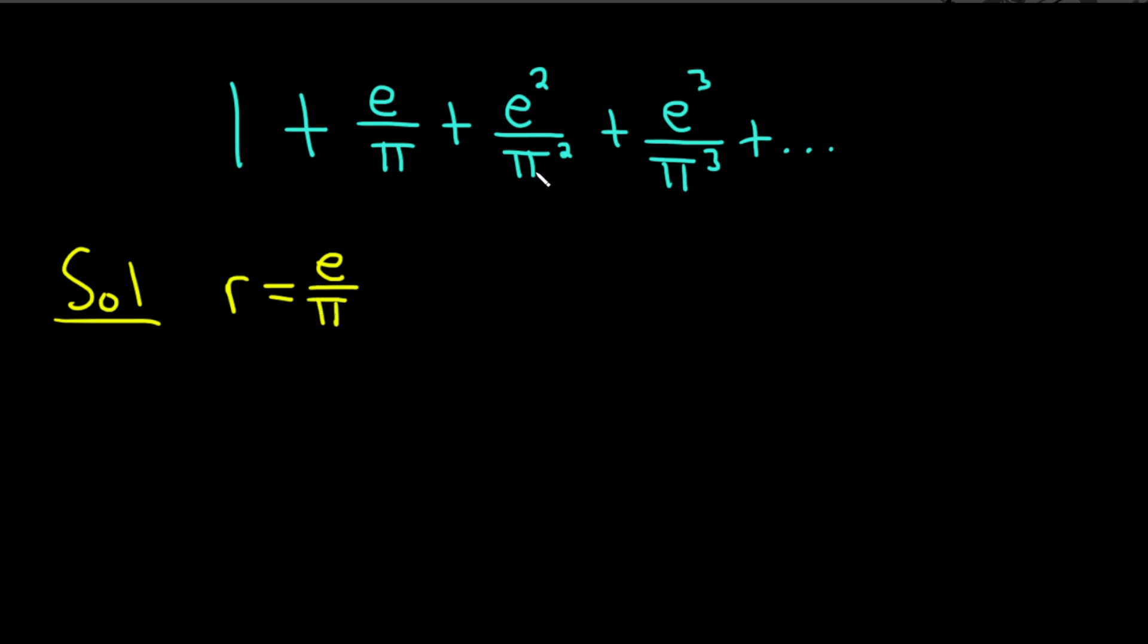If it's not obvious, you can just take any of these and divide it by the previous to get this. So for example, you could take this one and divide it by this. So if you look at e squared over pi squared and divide it by the previous, e over pi...